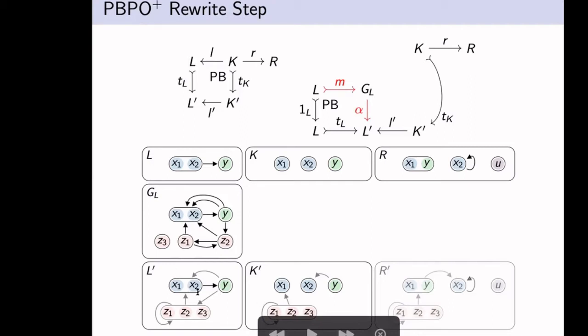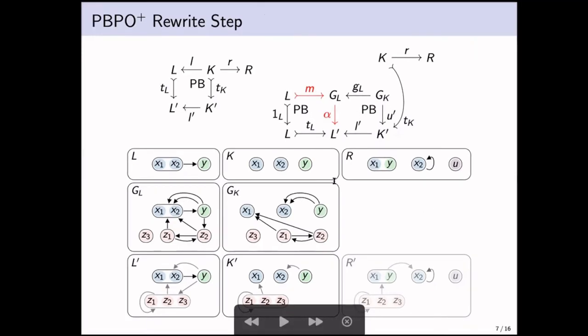Then for this bottom co-span, we construct a pullback to model the effect of L' on our host graph. So some of these edges, the ones from Y to the context are deleted, and we do this duplication operation. And then finally, we would like to do a pushout on a span from K to GK and from K to R. So for this, we need a morphism, and for PBPO+ we have the result that there always exists a unique mono U, such that U and then U' equals the mono TK. So we single out that particular morphism to do the pushout on.